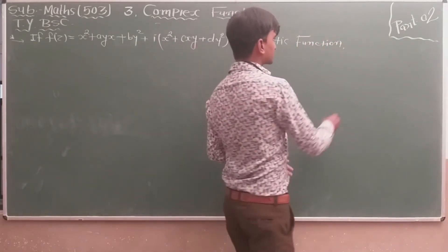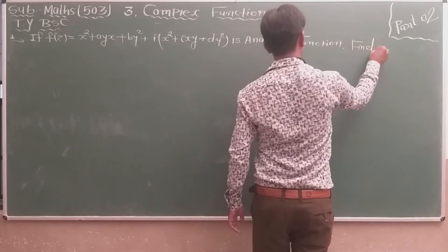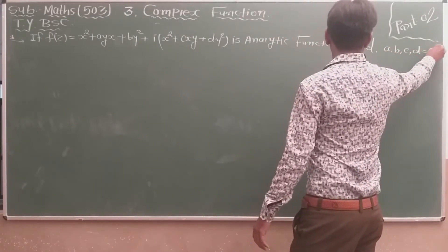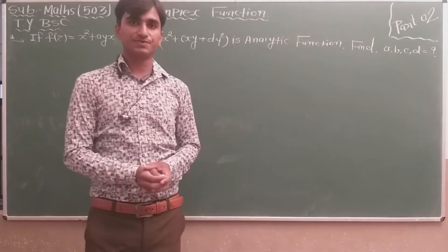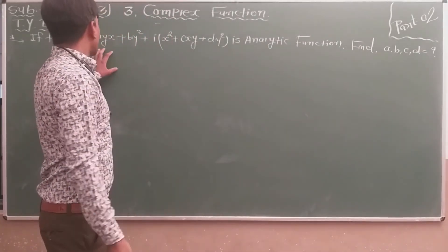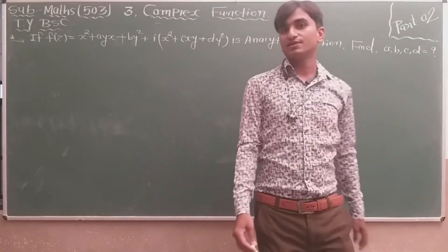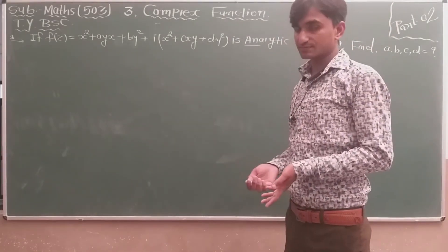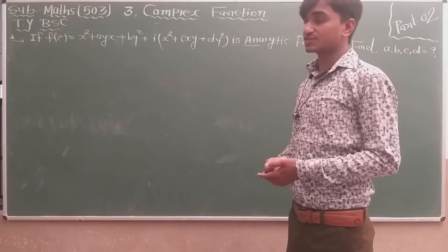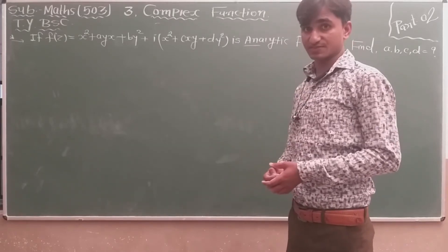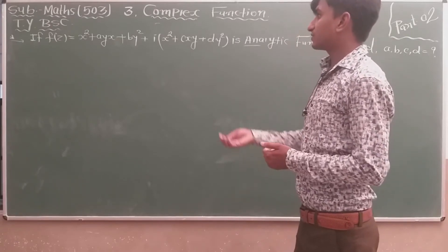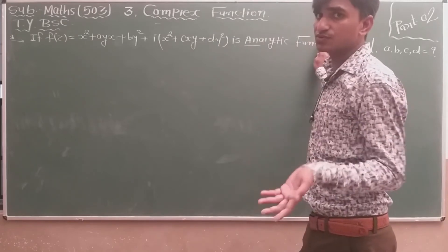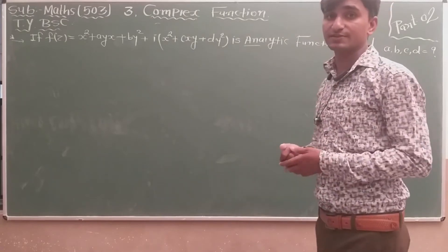In this example, we are given that f(z) is an analytic function, so the CR conditions for the given function are satisfied. By using the CR conditions, we will find the constants a, b, c, and d.